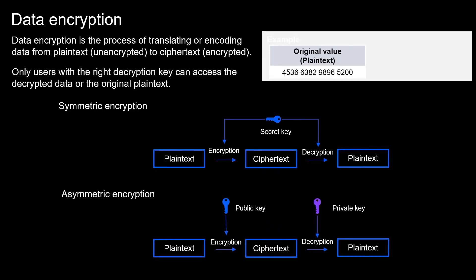Data encryption is one of the ways to achieve confidentiality. It is a way of translating data from plain text, which is unencrypted, to ciphertext, which is encrypted. Only users with the right decryption key can get the decrypted data or the original plain text. Here you can see a string of numbers encrypted into an unreadable format known as ciphertext. The person with the decryption key can read the data — so even if a data breach happens by stealing storage media or copying files, the data would be unusable because it is encrypted.